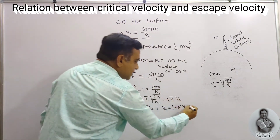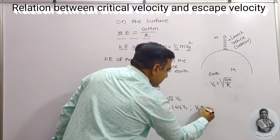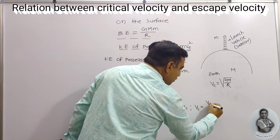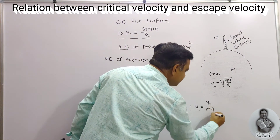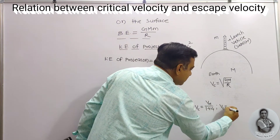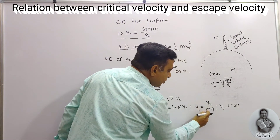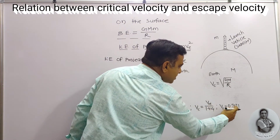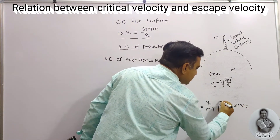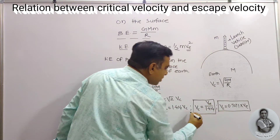We can also express this equation in terms of vc: vc = ve / 1.414, or taking the reciprocal, vc = 0.7071 · ve. These are the relations we need to remember to solve numerical problems.